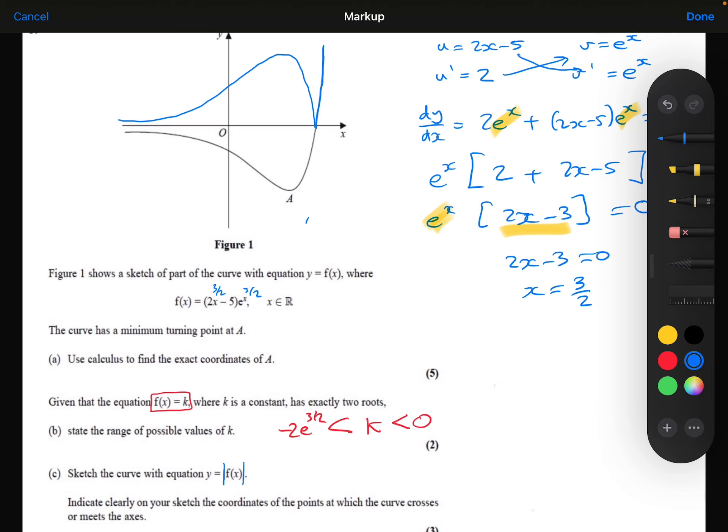I need to indicate the points where the curve crosses the axis. So I need to say what this coordinate here is. Here I know x is 0, so if I substitute 0 into that original function, I'll get 2 times 0 minus 5 times e to the power 0, which gives minus 5. Well, that would be minus 5 down here, but when I do the modulus of that, I'll obviously get plus 5.